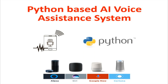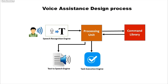Let's first see how a voice assistant module works. A voice assistant module has five major components. First, the speech recognition engine captures your voice and converts it into text. Then the processing unit gets the text and compares it against the command library to check whether the command is valid. If the command is valid, it will perform the associated task and produce output.